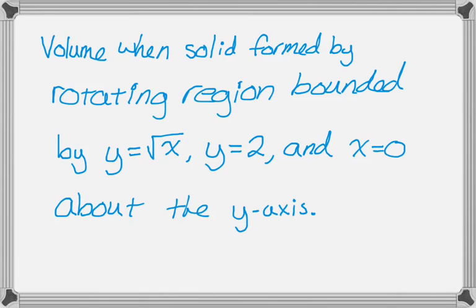Here's our problem: find the volume when the solid formed by rotating the region bound by y equals radical x, y equals 2, and x equals 0 is rotated about the y-axis.